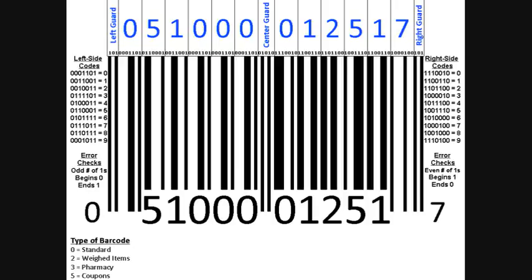The next set of five numbers tells us who the manufacturer of the product is — in this case, it's the Campbell Soup Company. The second set of five digits tells us the product code, which in this case is a ten and three-quarter ounce can of chicken noodle soup. And finally, the last number on the right-hand side is called the modulo check character, and this is another form of error checking.